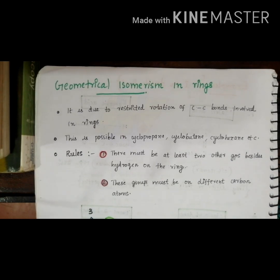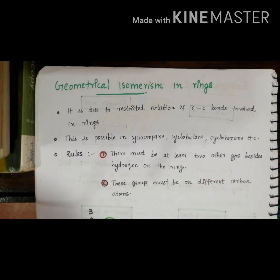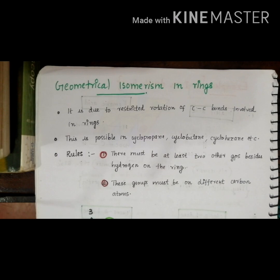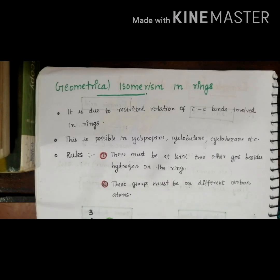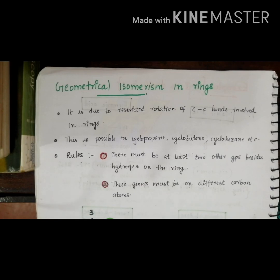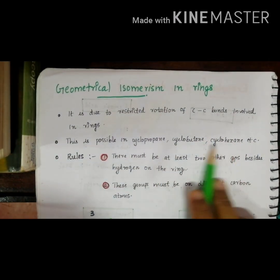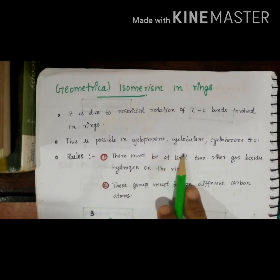The next category of this compound is geometrical isomerism, classified as two types: in rings and in double bonds. We have already discussed double bond cases. Here we are discussing geometrical isomerism in ring compounds. The reason for geometrical isomerism in ring compounds is again due to restricted rotation. It is mainly found in cyclopropane, cyclobutane, and cyclohexane.